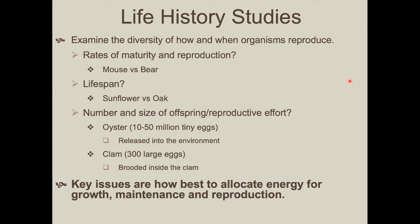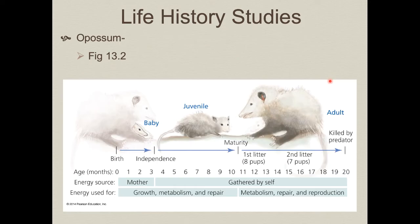What life history studies show is how species vary in their allocation of energy for growth, maintenance, and reproduction. In a possum, when they're young — up to about three months old — they receive nutrition from their mother in the form of milk, which is used for growth, metabolism, and repair.